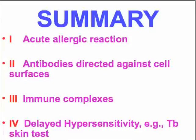As a summary: there are four types of hypersensitivity diseases — acute allergic reaction, antibodies directed against cell surfaces, immune complexes as number three, and the classical delayed hypersensitivity reaction as type four. We'll start next time with slide number 34. Thank you very much.